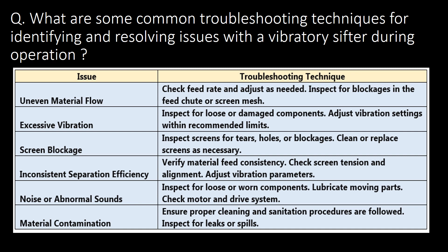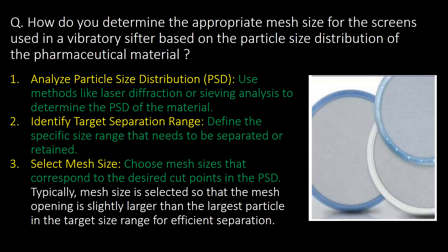What are some common troubleshooting techniques for identifying and resolving issues with a vibratory shifter during operation? The major issues include uneven material flow, excessive vibrations, screen blockage, inconsistent separation efficiency, noise or abnormal sounds, and material contamination. Refer to the table below for issues and their corresponding troubleshooting techniques.